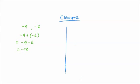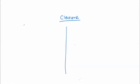Here we can see that minus 4, minus 6, and minus 10 are all integers. Hence we can say that integers are closed under addition. Let's look at another example with integers minus 4 and plus 3.